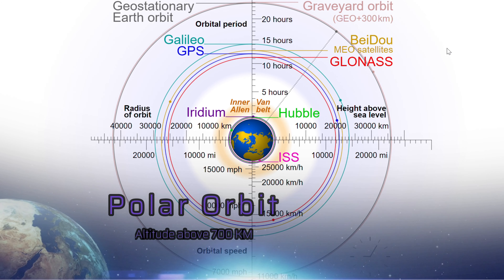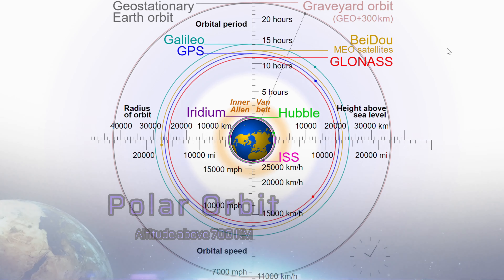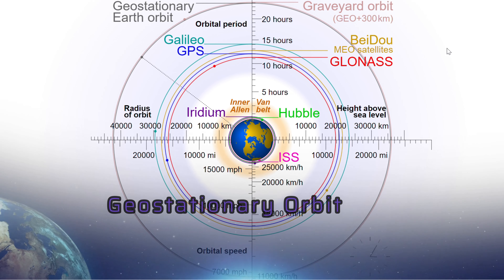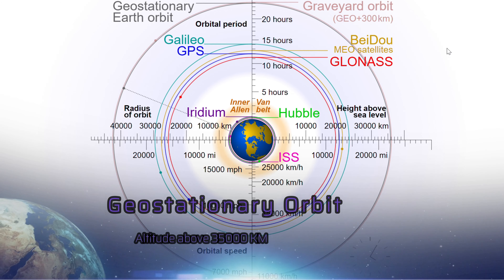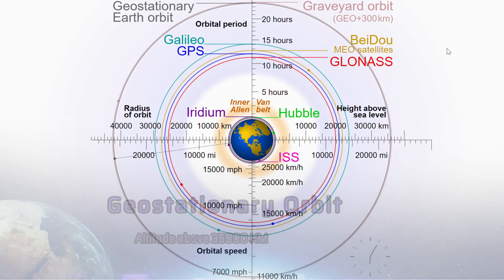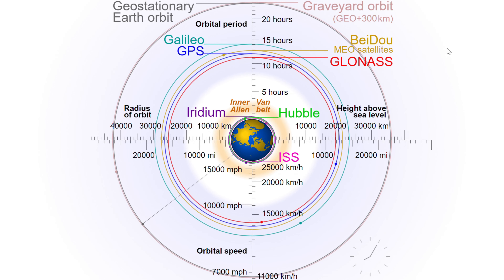To obtain uninterrupted coverage of more than one-third of Earth, the satellites are generally kept in geostationary orbit. In general, meteorological satellites are present at an altitude of 36,000 km in geostationary orbit.